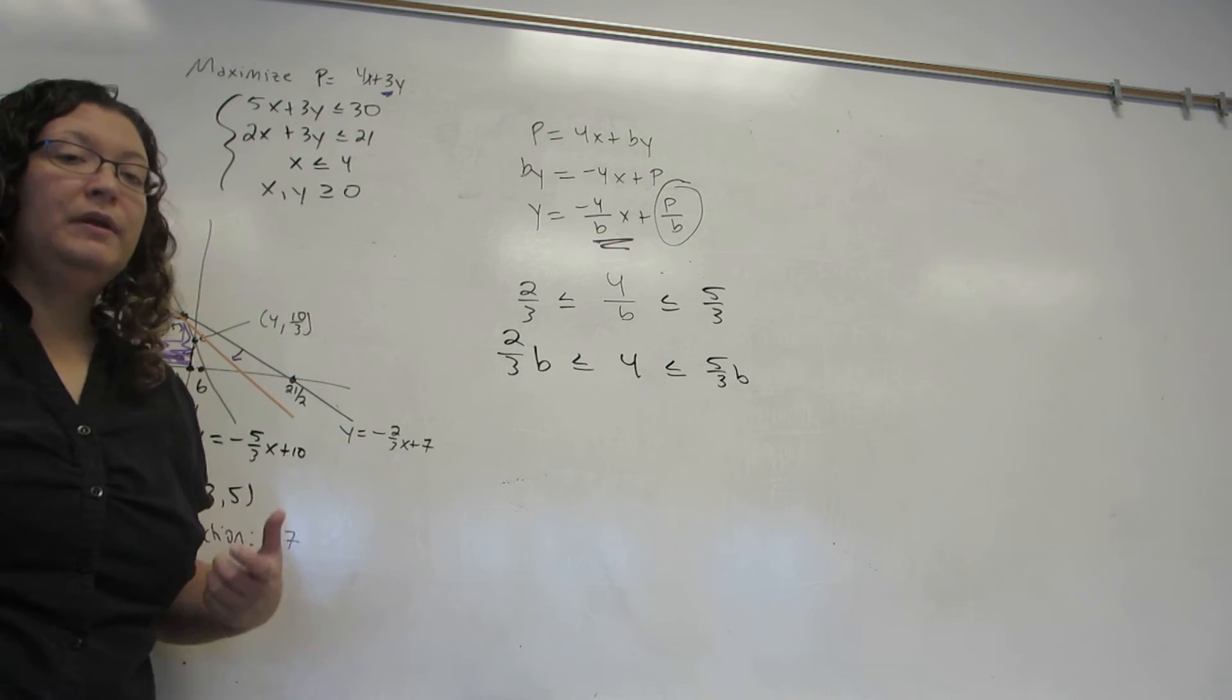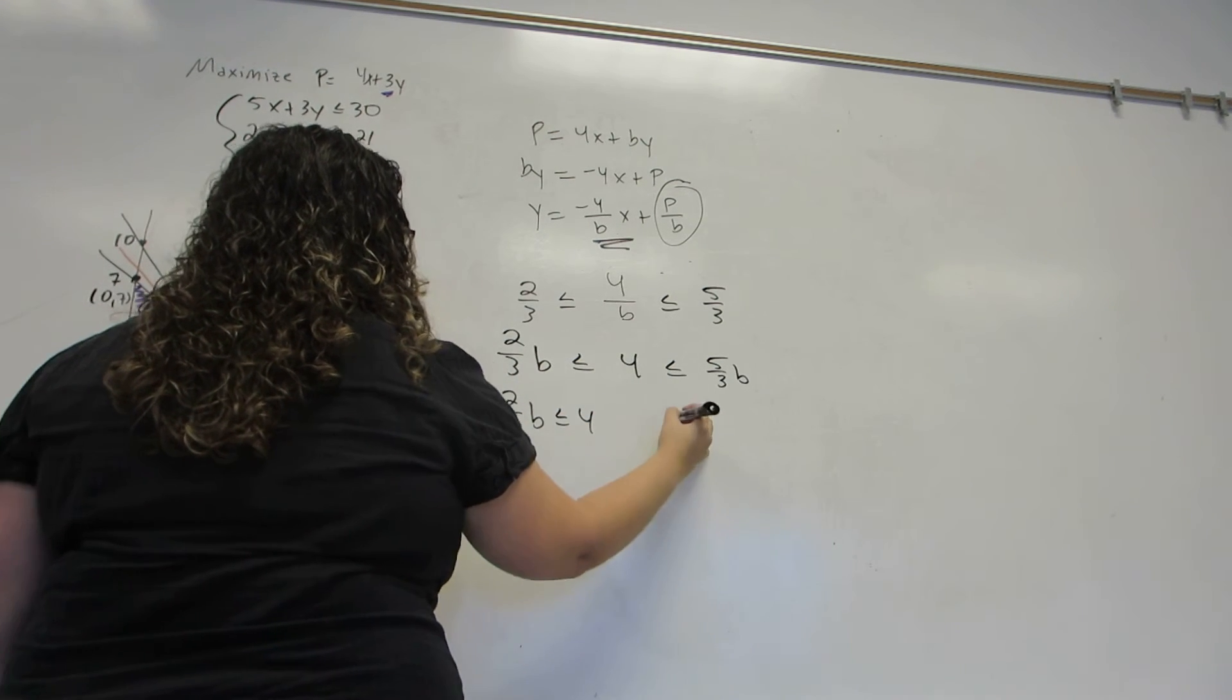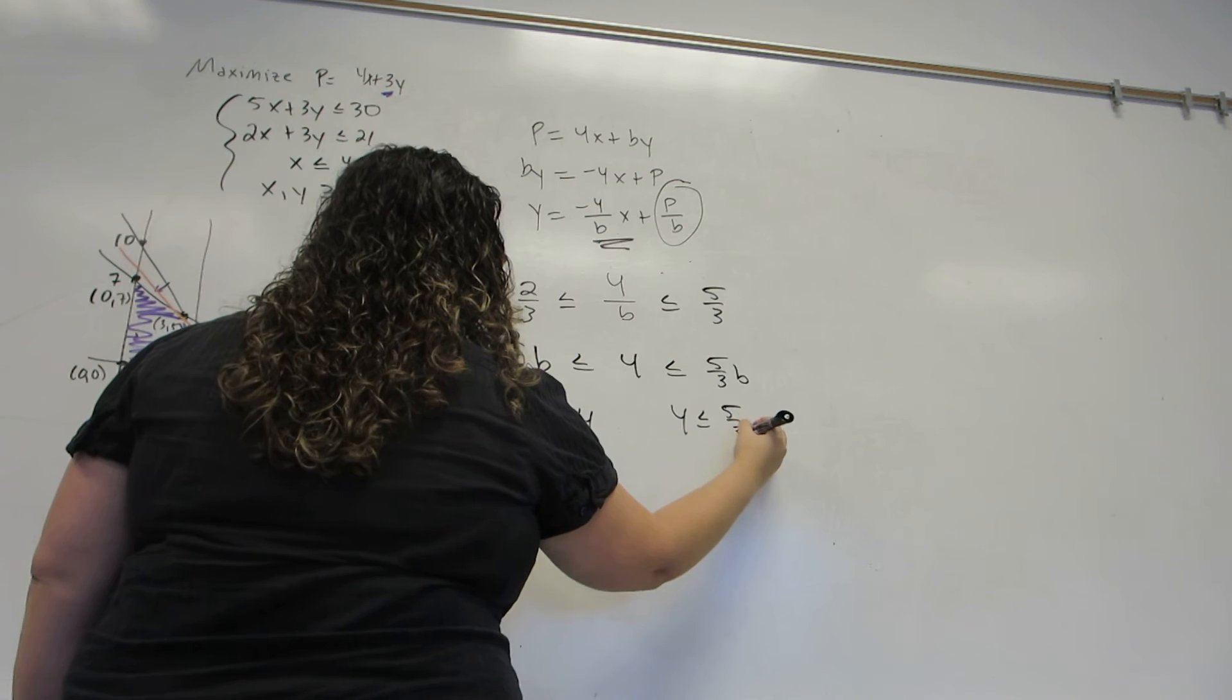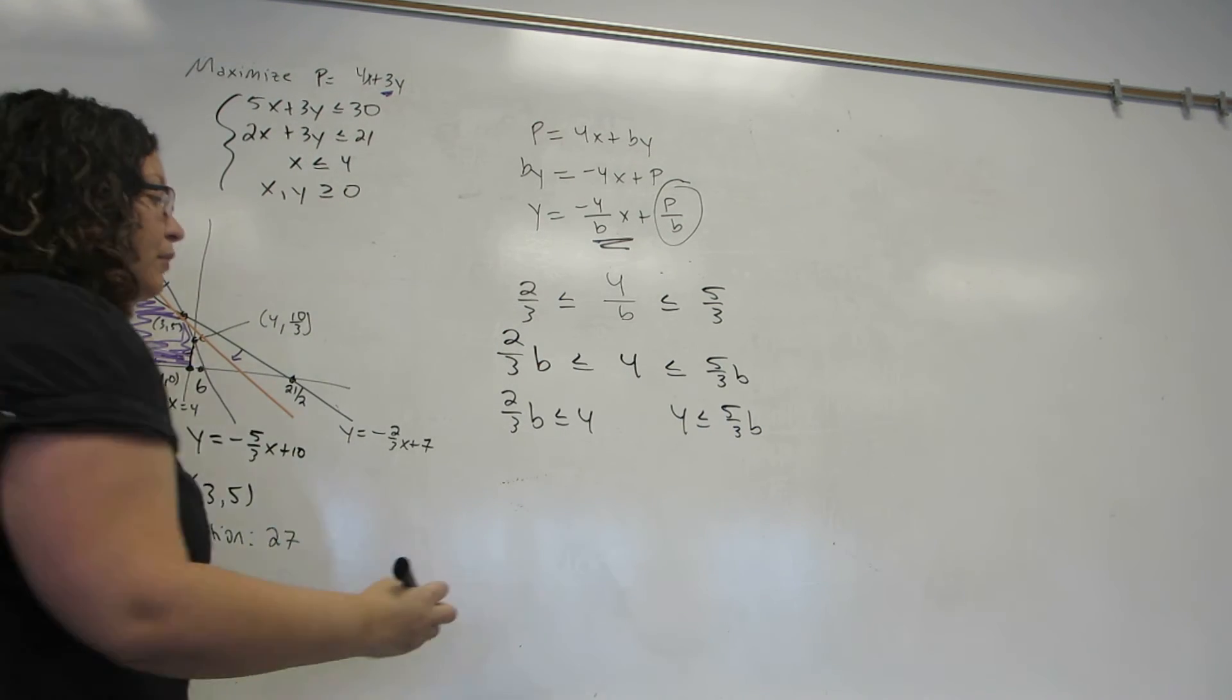It's hard to solve for b when there are two of them. So at this point, I'm going to break the inequality up into two pieces by duplicating the center and solve each of those separately for b.